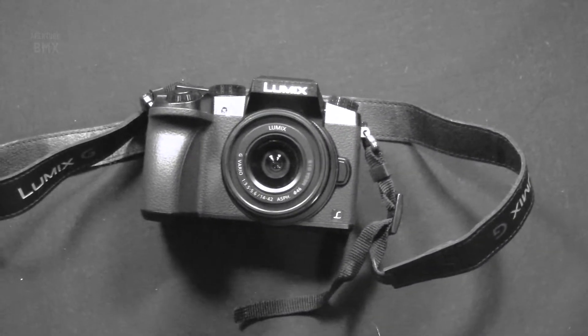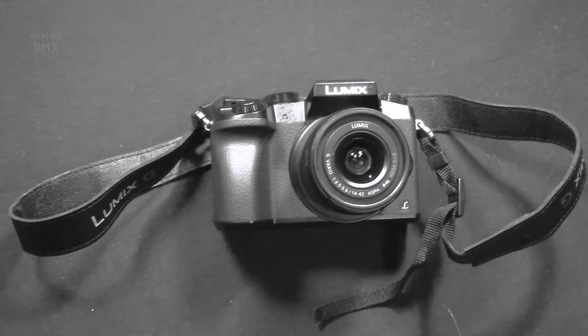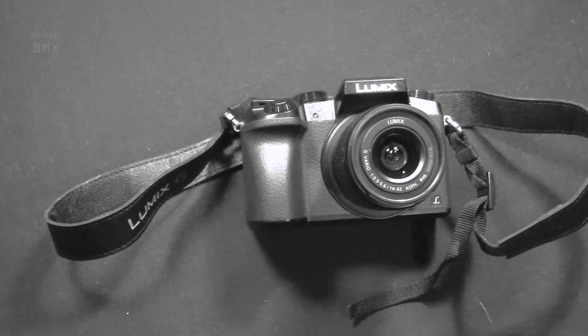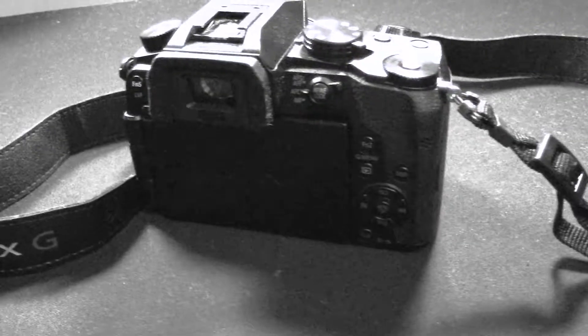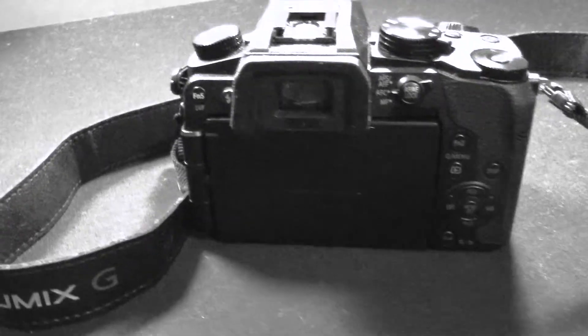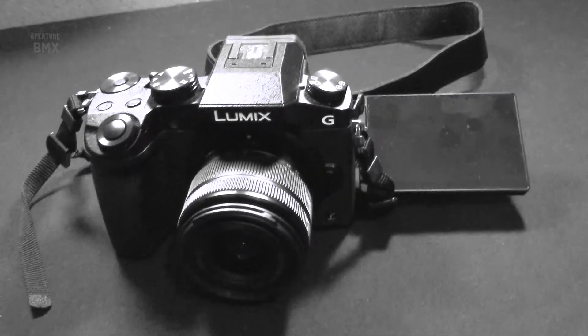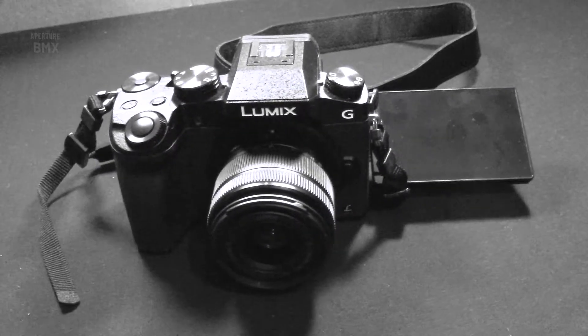It's a micro four thirds camera, so the sensor is slightly smaller than a 35 millimeter full-frame camera, but I don't care. The reason I picked this camera is because it's small. I want a setup that I can just take with me wherever, throw it into a day pack, take it with me to the track, and start filming.